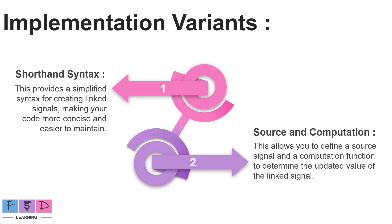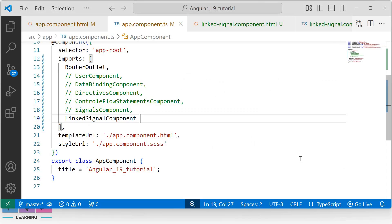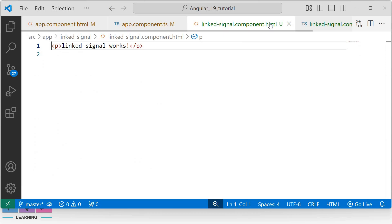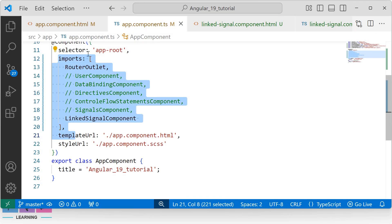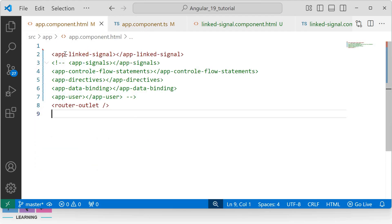Linked signal supports two implementation variants: shorthand syntax, and source and computation configuration. Shorthand syntax provides a simplified syntax for creating linked signals, making your code more concise and easier to maintain. Whereas linked signal with source and computation allows us to define a source signal and a computation function to determine the updated value of the linked signal. Let's understand these two implementation variants with practical examples inside Visual Studio Code, where I have already created a linked signal component and imported it inside the imports array of the app component.